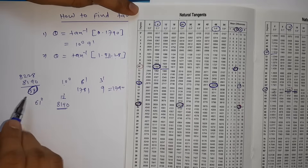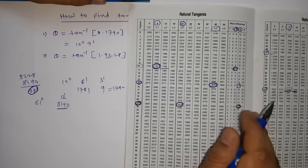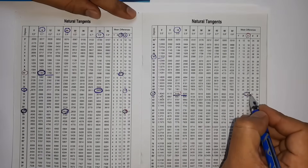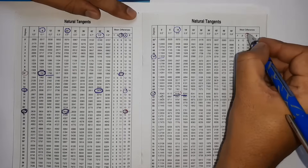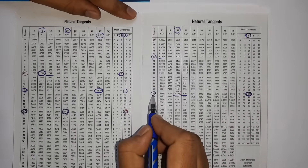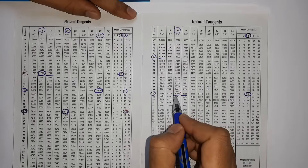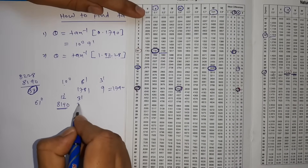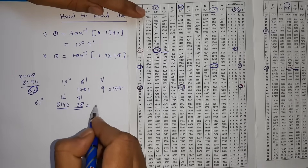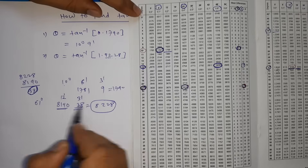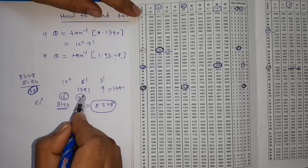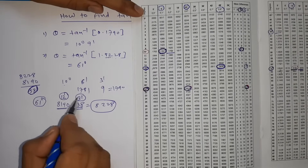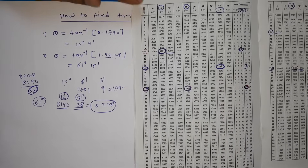The remaining difference is 38, so I look in the mean difference column. I find 38 at 3 minutes. So at 12 minutes I got 8190, and at 3 minutes I got 38 — together that gives 8228. Total minutes is 12 plus 3 equals 15 minutes, and degree is 61. So the answer is 61 degrees 15 minutes. Thank you, students.